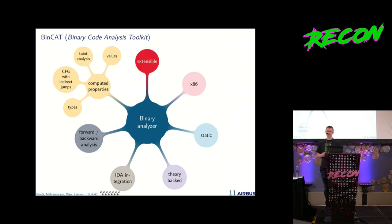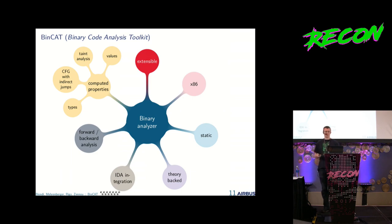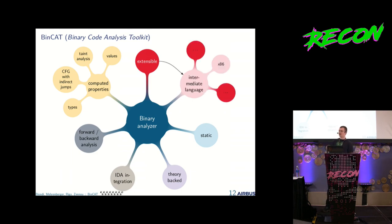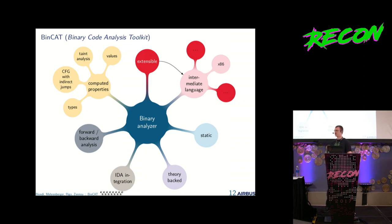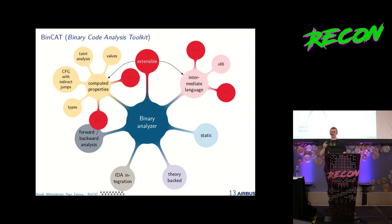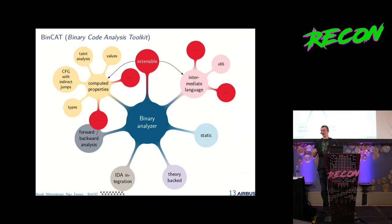We wanted to make Bincat extensible — to make it easy to add new things. We don't analyze x86 directly; nobody does that. So we added a new intermediate language to support x86. The analysis runs on the intermediate language and not directly on the x86 code. So if you want to add a new decoder, you only have to write the decoder to produce the intermediate language and then run the analysis. You can also extend the properties, which help each other with all computations done in parallel.